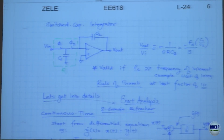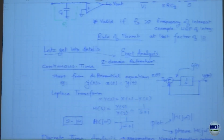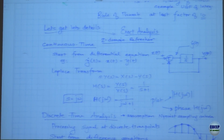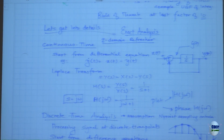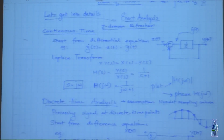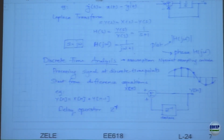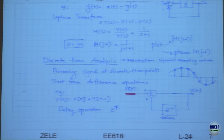We studied the switch cap integrator and went through Z-domain analysis — first continuous time, then discrete time. The architecture uses Xn and Yn, exactly the same as what we did in the S-domain, with a delay operator Z^(-1). When you analyze this transfer function, it comes out to be 1 divided by (1 minus Z^(-1)).